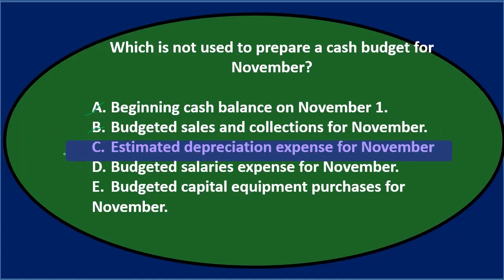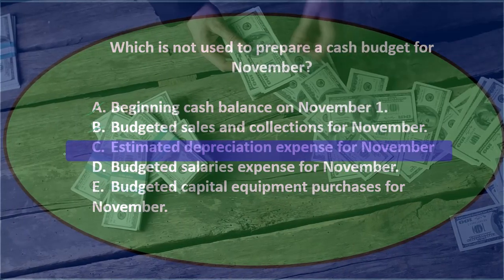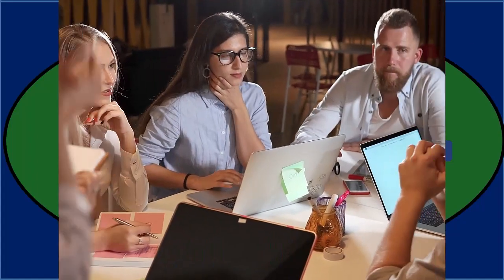C. Estimated depreciation expense for November — depreciation is not a cash item. Textbooks love asking this question because it tests accrual items versus cash items. We're on the cash budget, and depreciation expense has no cash involved. We debit depreciation expense and credit accumulated depreciation; we spent the cash in the past when we purchased the equipment. The act of recording depreciation involves no cash, and therefore it's not on the cash budget. So as soon as we see depreciation — something that does not involve cash — that's usually going to be the answer. It's a common mistake because it appears on the income statement as an expense, but there's no cash, similar to a cash flow statement.